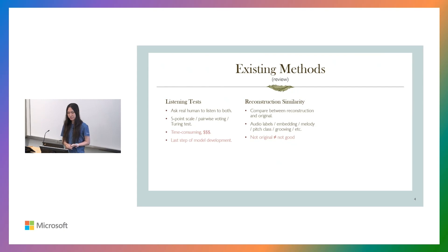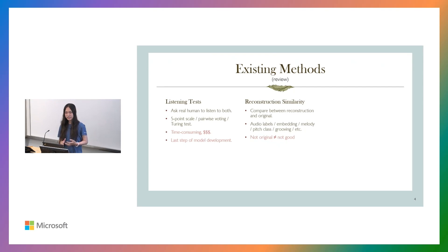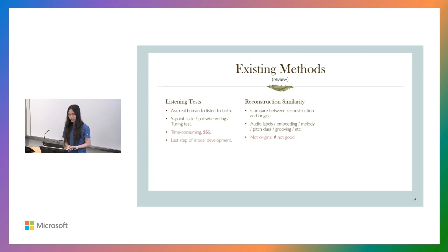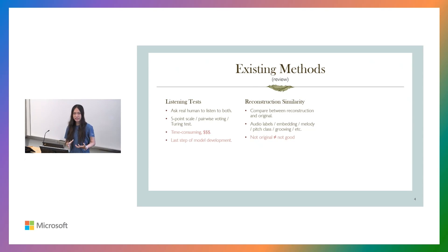Moreover, some conditional models use reconstruction similarity. They compare between the reconstructed signal from the original. For example, if you have a model that is conditioned on audio, you can compare the generated audio from the last segment of the original audio clip. They compare things like audio labels, embedding, melody, pitch, groove, etc. However, this method also has a problem. Being departed from the original doesn't mean the resulting audio is not good. For example, you can have a really good-sounding music that is different from the original.